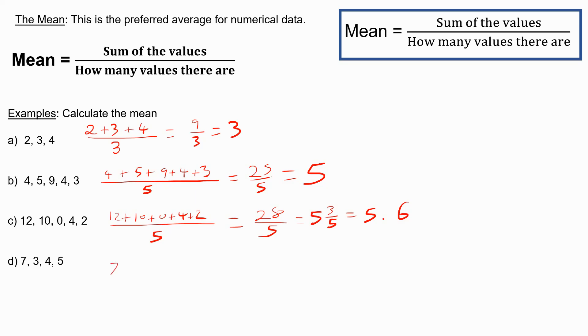And lastly, we have seven plus three plus four plus five over four. So we have 10, 14, 19 over four, which is going to be four and three-quarters, or 4.75.